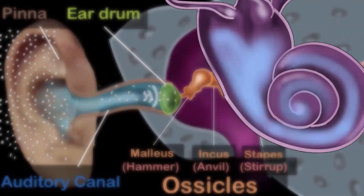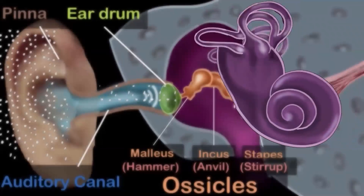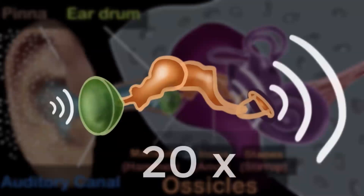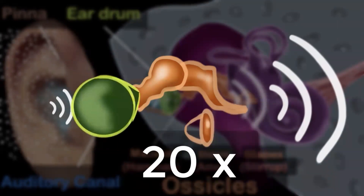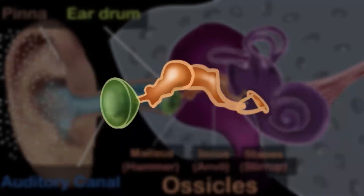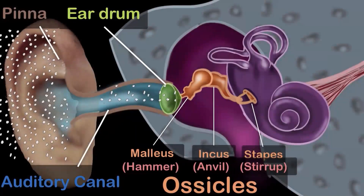It is easy to swing your arms in air but difficult to do that in water in a swimming pool. So to set the liquid in vibration, the pressure must be high enough. In fact, the ossicles increase the pressure of the sound about 20 times. This happens because the base of the stapes has a much smaller area than the eardrum, concentrating the force and increasing pressure.